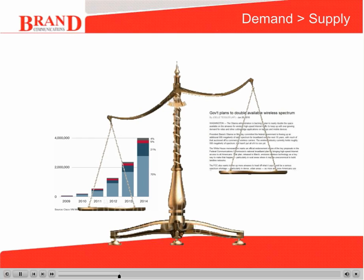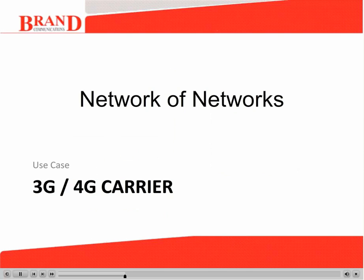Wireless carriers worldwide are scrambling to find ways to address the opportunity and mitigate the risks of managing the forecast increase in mobile data. One such strategy involves the intelligent use of multiple networks such as 4G and Wi-Fi to offload 3G data traffic, avoiding congestion and reducing the cost per bit. We will now introduce use cases describing how the network of networks provides a compelling solution for wireless carriers and service providers.